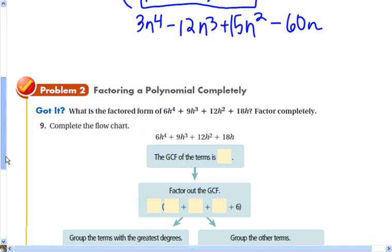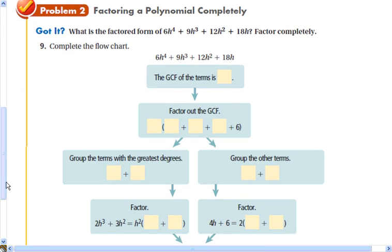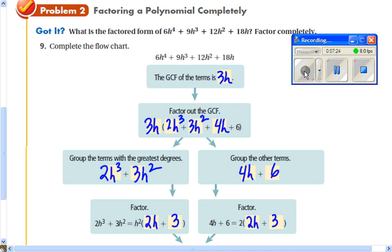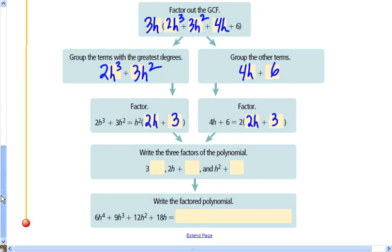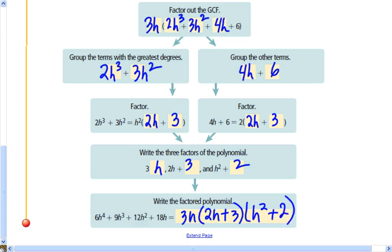I'll let you try that. Follow the chart here to factor 6h⁴ + 9h³ + 12h² + 18h.